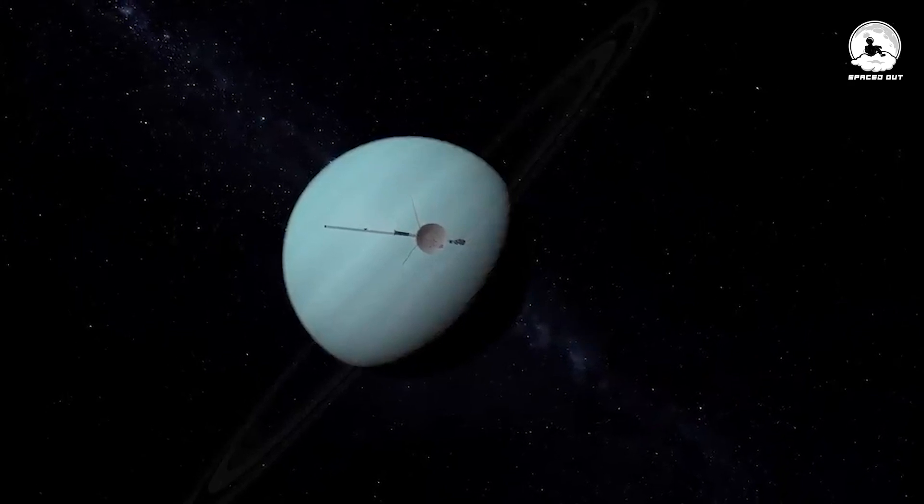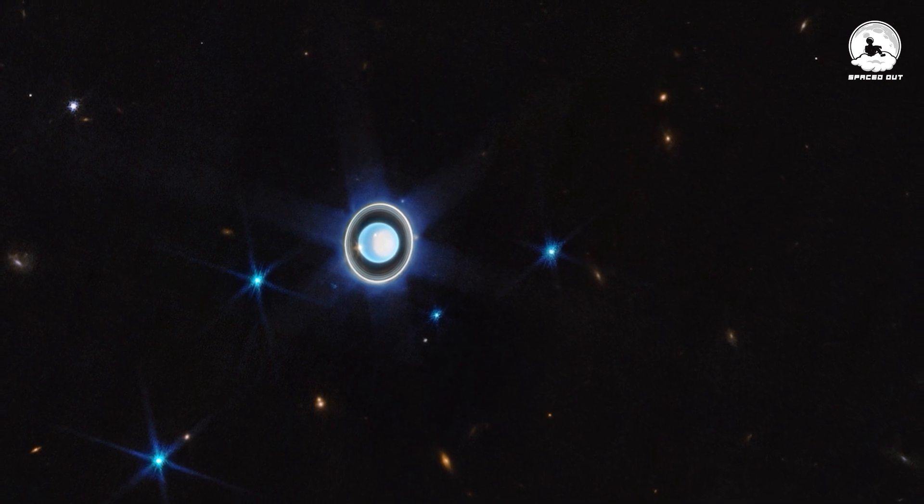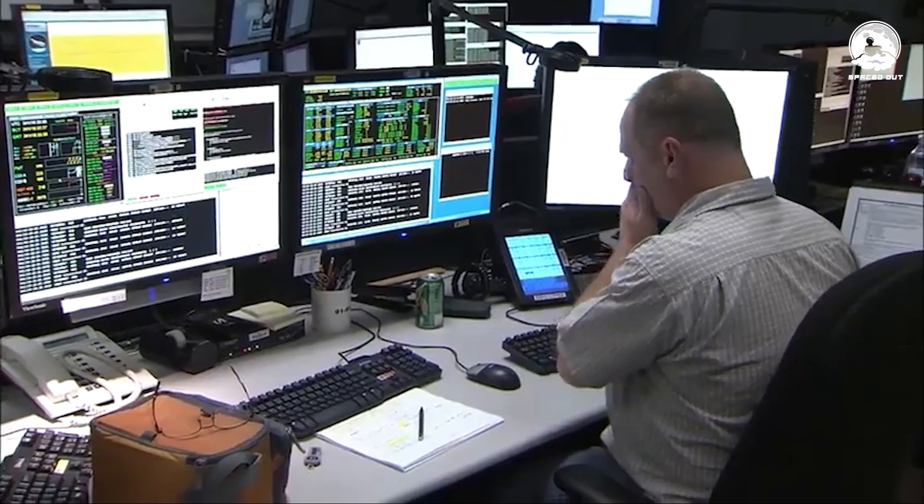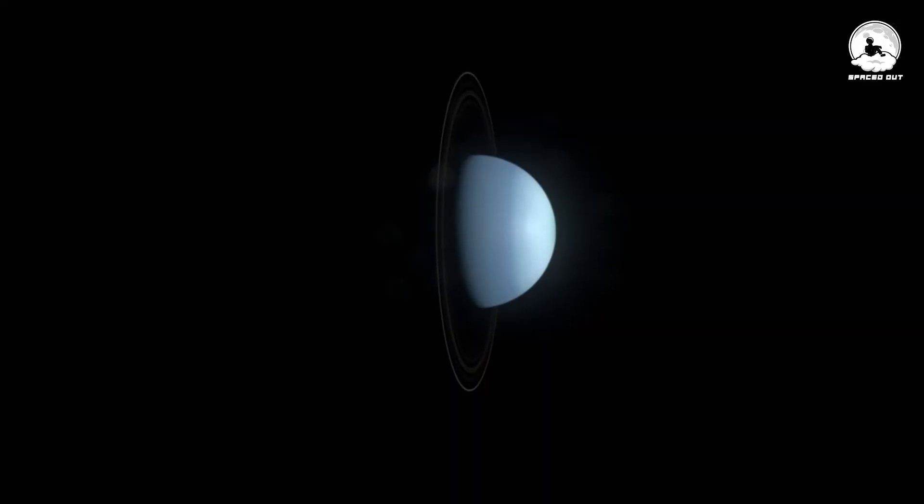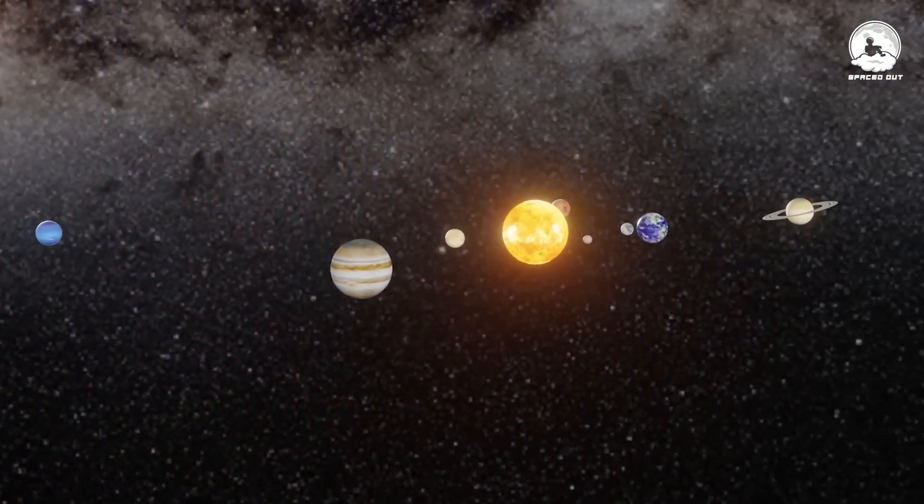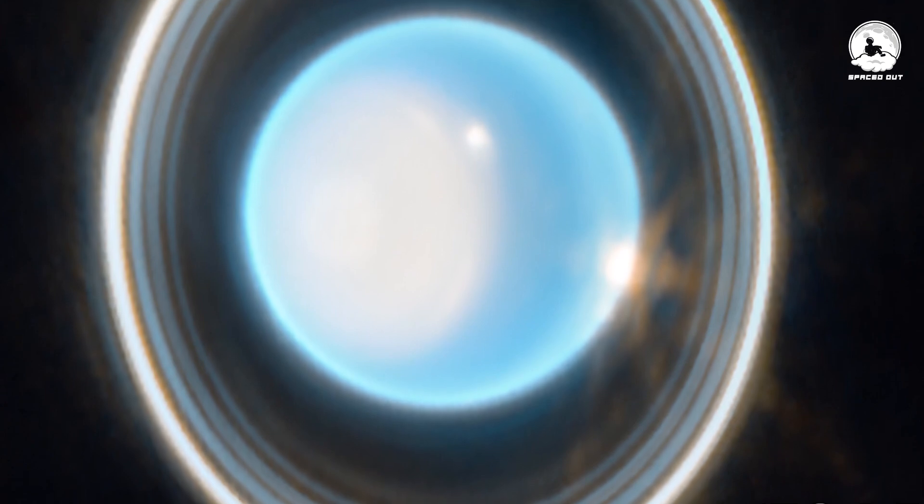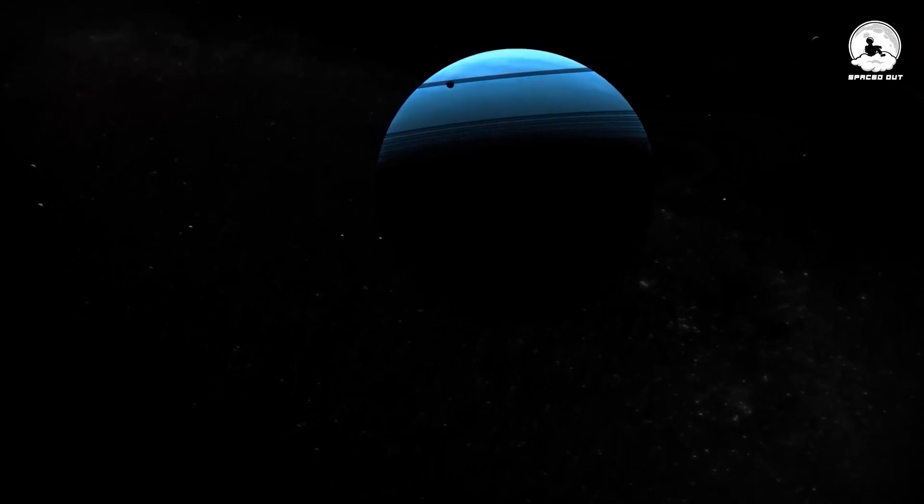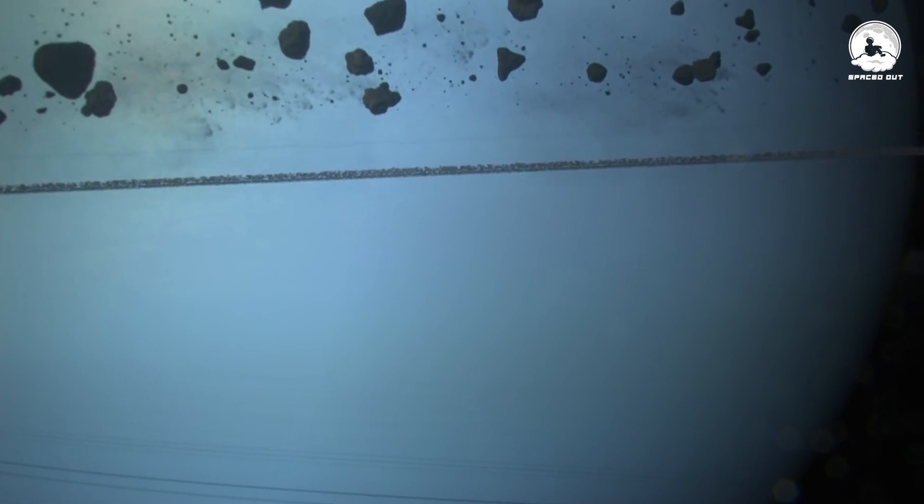The latest image of Uranus isn't just a stunning visual treat, it's a scientific treasure trove. It holds the key to unraveling the mysteries of this captivating world and allows us to draw comparisons with other planets in our solar system. Beyond its aesthetic appeal, this image serves as a valuable tool for testing and refining our theories about Uranus's structure, composition, weather and seasons, offering insights into how these elements evolve over time.